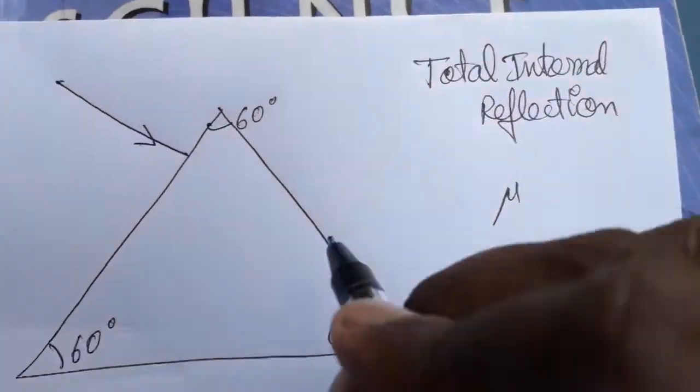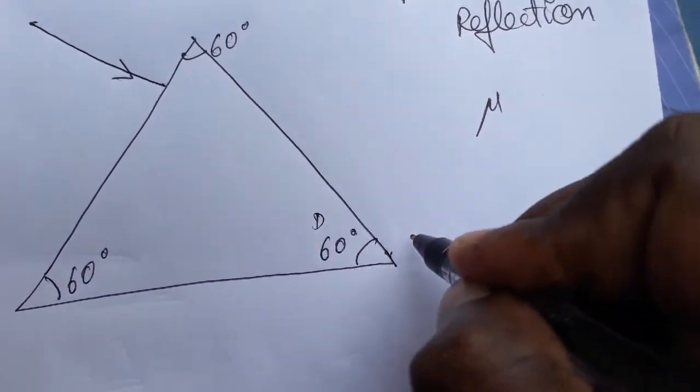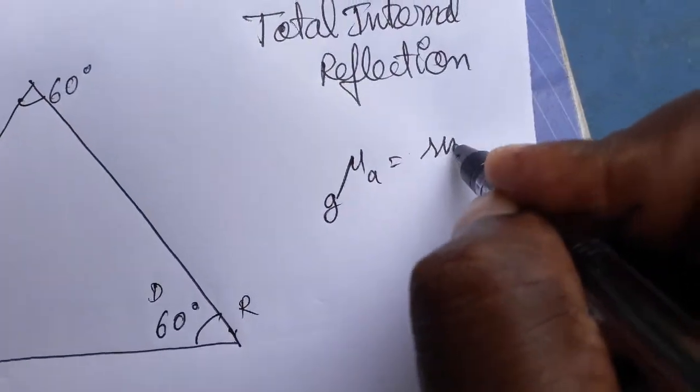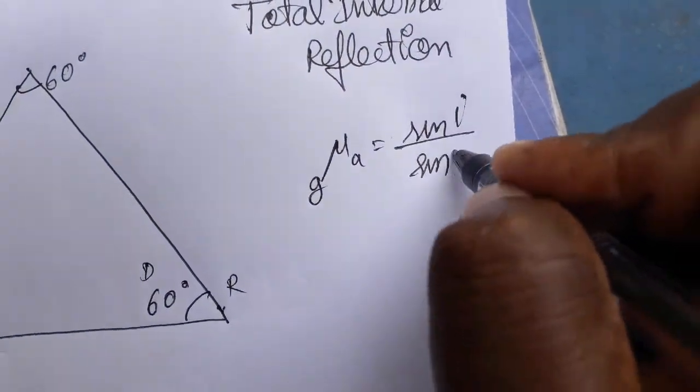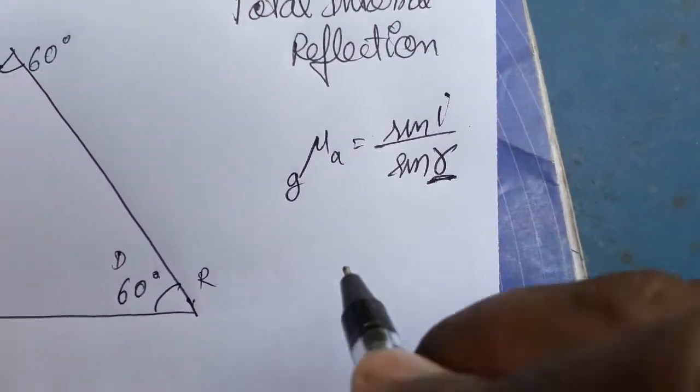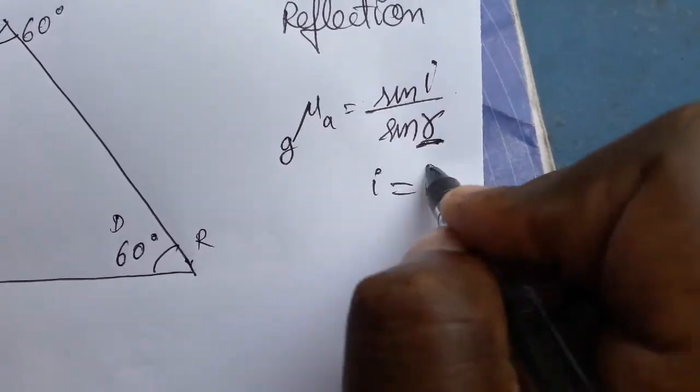When light passes from denser medium to rarer medium, we take μ G to A equals sin I by sin R. So R will become 90 degrees; it will be refracted on the surface when I becomes IC.